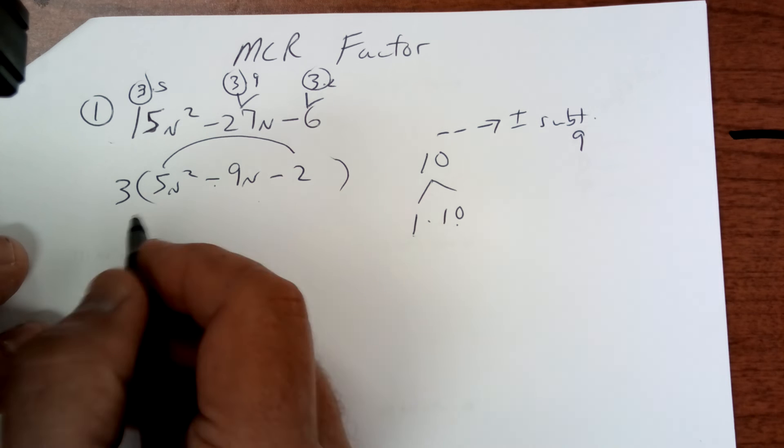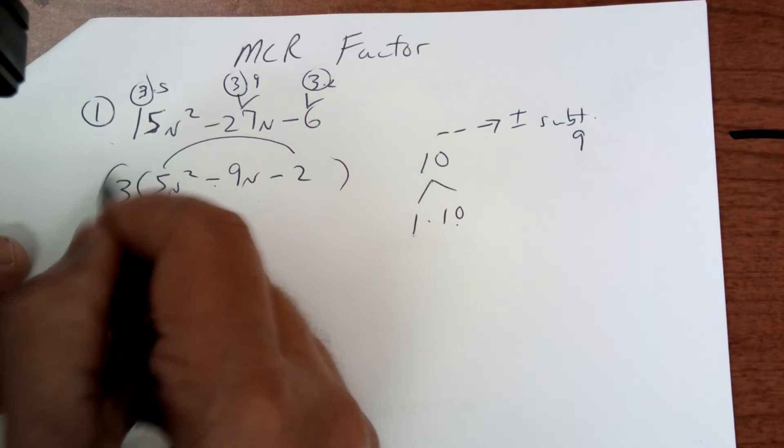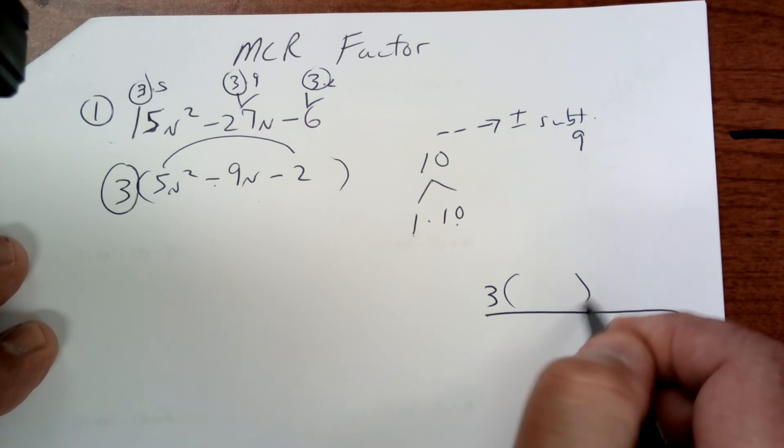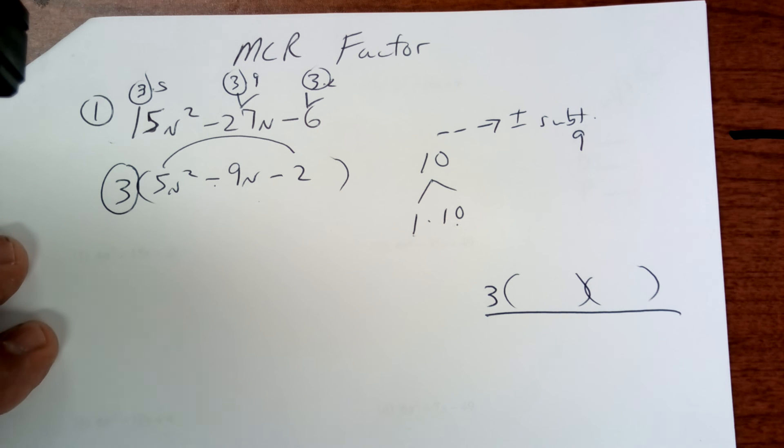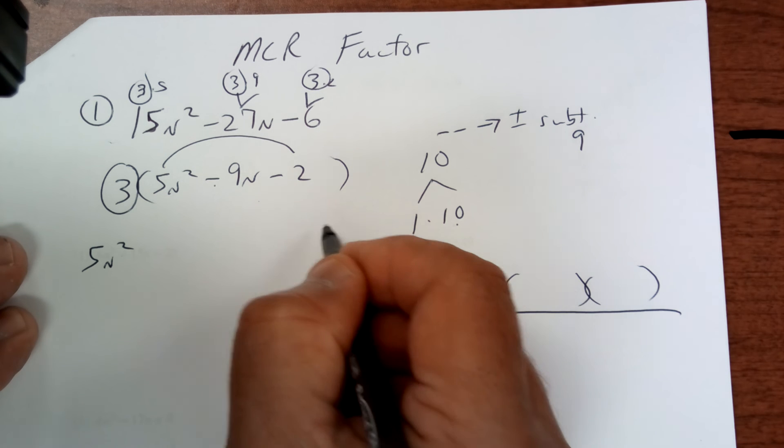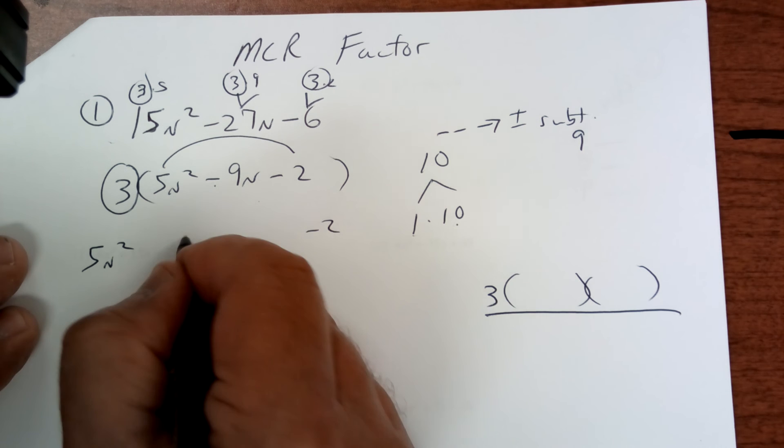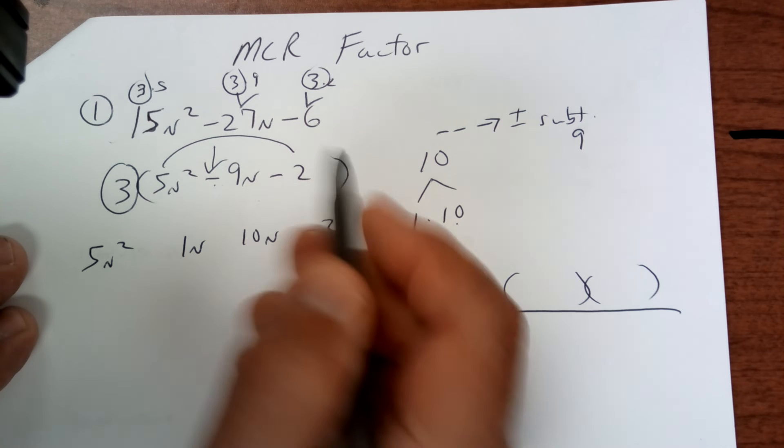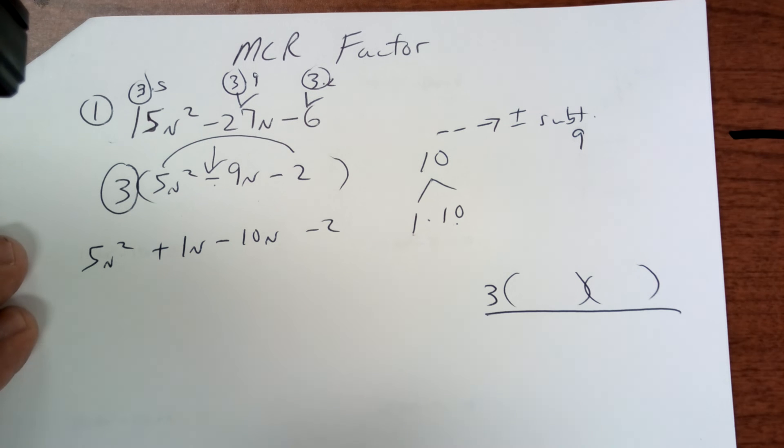So on this part right here, that 3 is going to be part of your answer. So let's not forget it. I'm going to write it right here. So I don't forget it because chances are I would. So you're going to rewrite the first one. And you're going to rewrite the last one. And then you're going to substitute the 1n and the 10n. And since the middle one is a minus, that's going to go here and the plus goes there. It goes with the bigger one.